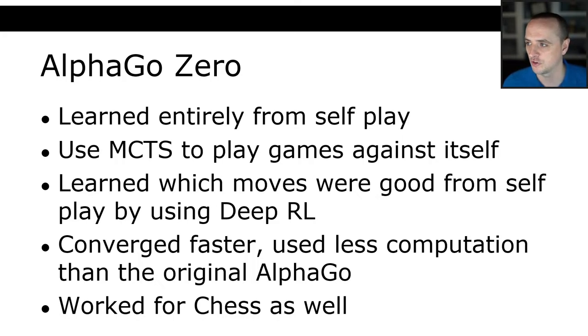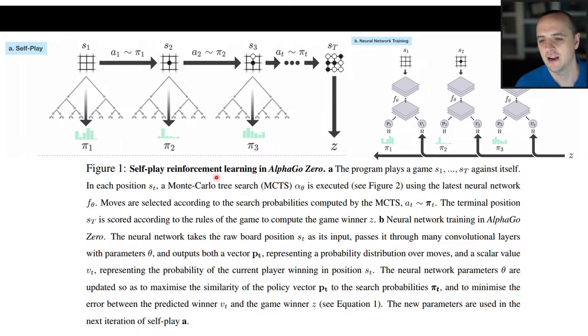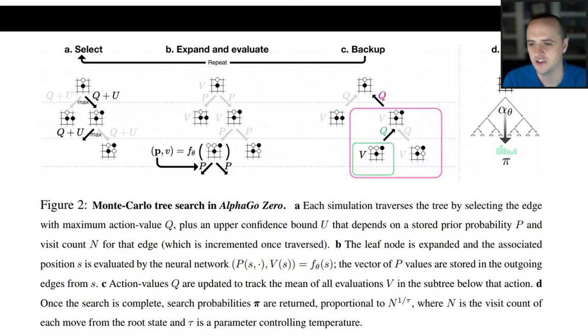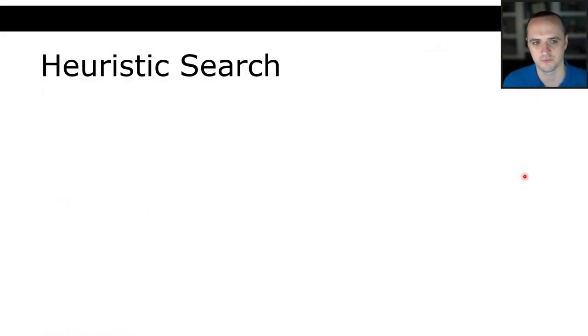It still uses MCTS to play games against itself to choose actions. It didn't have that initial step of learning from humans. So it learned which moves were good from self-play using deep reinforcement learning. It actually converged faster and used less computation than the original version of AlphaGo. They showed that it actually worked well for chess as well. Here's a little slide. It's self-play reinforcement learning from AlphaGo Zero. You can see here that they were using heuristic search to guide the reinforcement learning. They weren't using search for the end policy like they were in the original AlphaGo, but they were using a form of Monte Carlo tree search in order to guide the actions for the reinforcement learning itself. You can see these diagrams here, this is the Monte Carlo tree search that was used in AlphaGo Zero. So yes, there was still some heuristic search used in AlphaGo Zero.